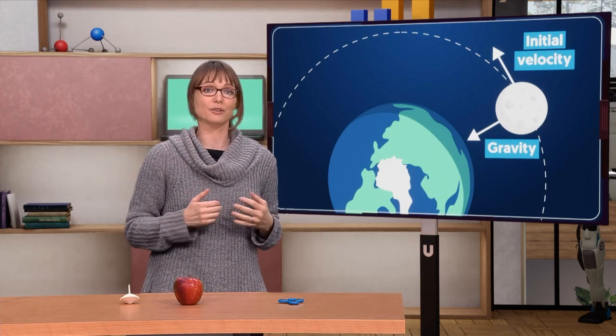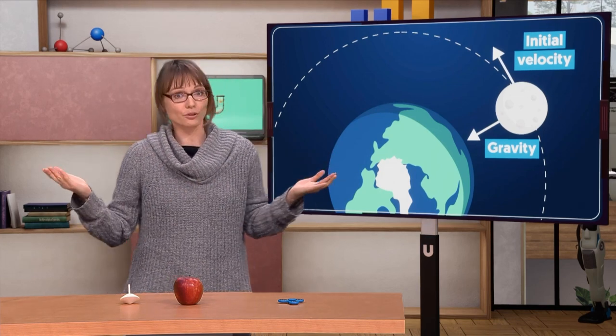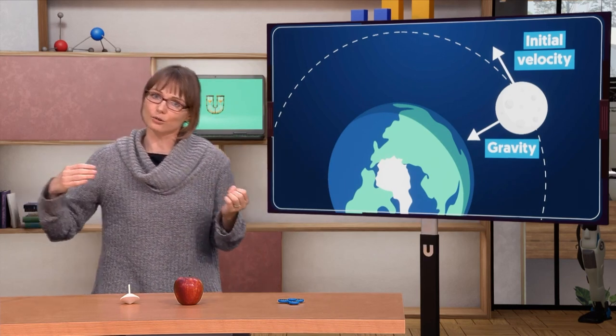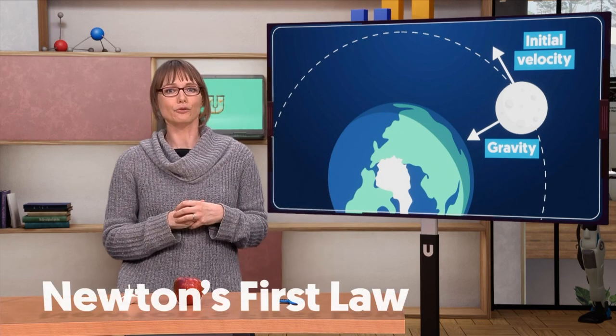Instead, the Moon is orbiting. If there wasn't any force, no gravity, then the Moon would just go straight ahead, away from Earth. This is actually Newton's first law.